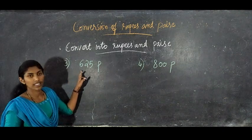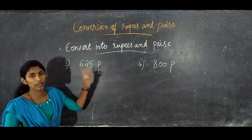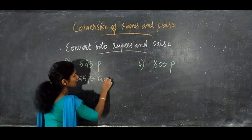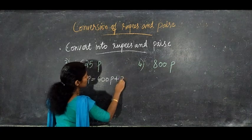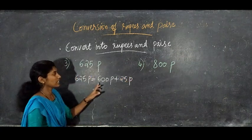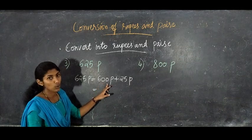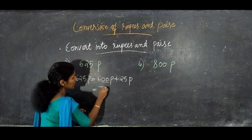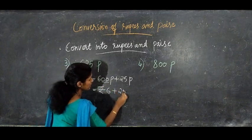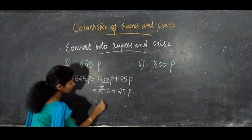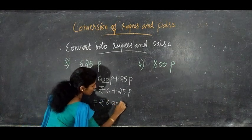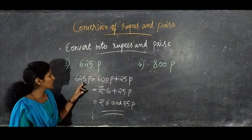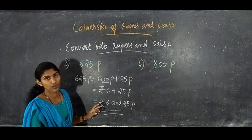Third question: convert 625 paisa to rupees and paisa. We write 625 paisa as 600 paisa plus 25 paisa. Converting 600 paisa to rupees by removing 2 zeros gives rupees 6. So 625 paisa equals 6 rupees and 25 paisa.